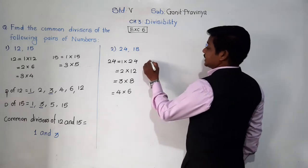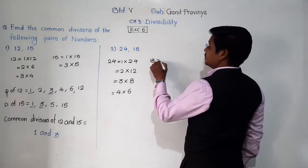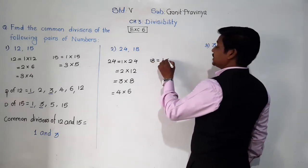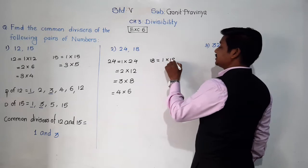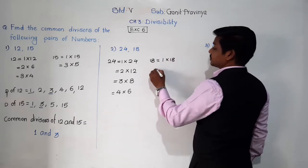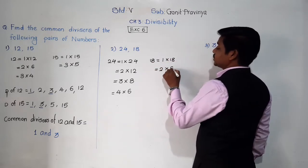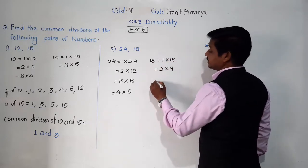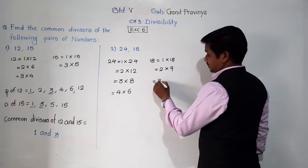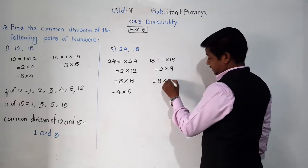For 18: 1 × 18, 2 × 9 is 18, 3 × 6 equals 18.